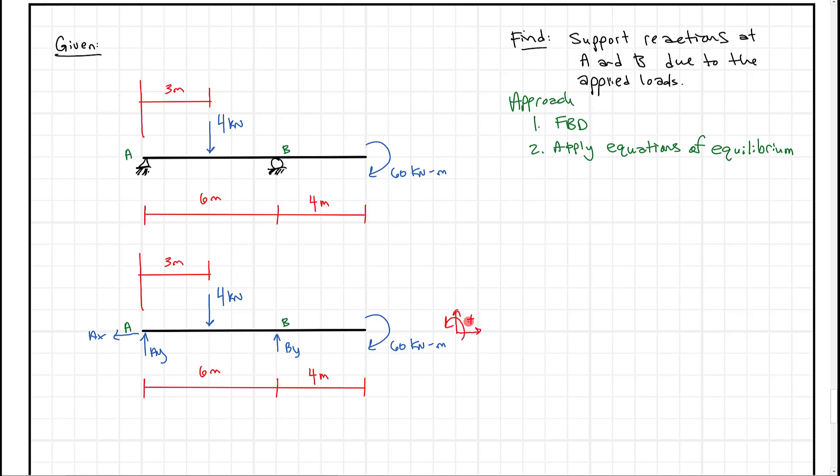So really the only other thing we need here for a free body diagram is a coordinate system that defines what we're saying is positive. So in this case, we're going to use this coordinate system for our positive X and Y, but we're also going to specifically use it for our equations of equilibrium.